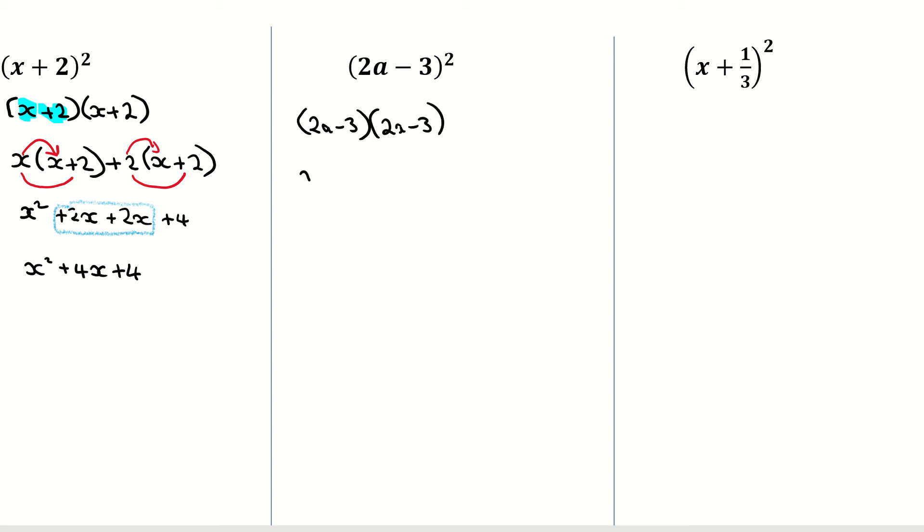Once again, it's first term by second bracket. So 2a by 2a minus 3. And then the second term, so this minus 3 here, minus 3 multiplied by my second bracket, which is everything in the second bracket, which is 2a subtract 3. I'm multiplying that out again. I'm going to use my arrows once again to denote multiplication. So 2a by 2a, the 2 by the 2 is giving me 4, a by a is giving me a squared.